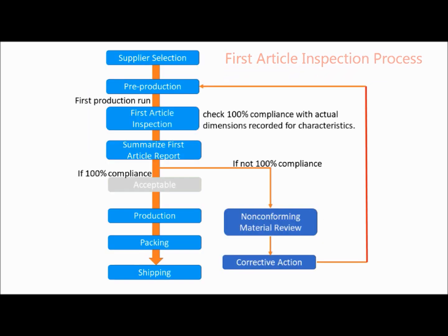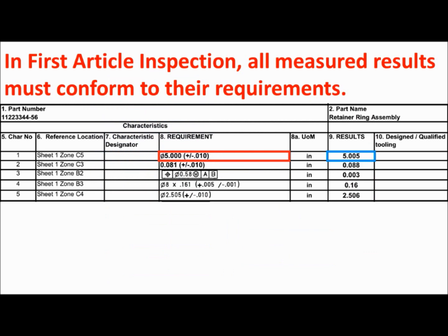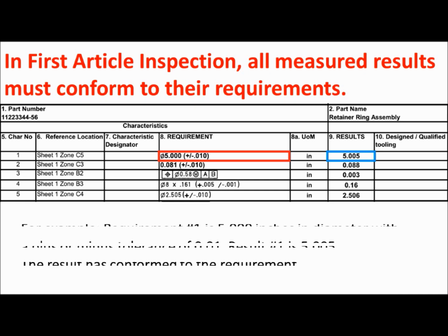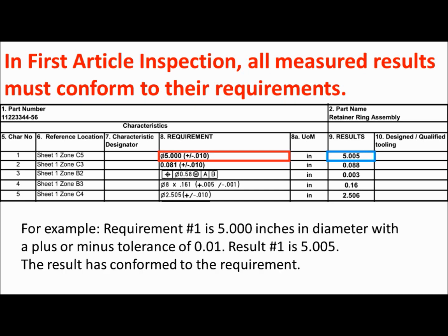First article inspection is conducted after the first production run. In first article inspection, all measured results must conform to their requirements. For example, requirement number one is 5.000 inches in diameter with a plus or minus tolerance of 0.01. Result number one is 5.005. The result has conformed to the requirement.